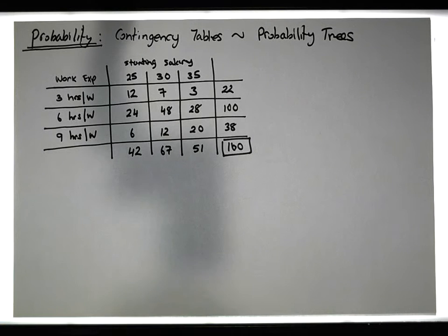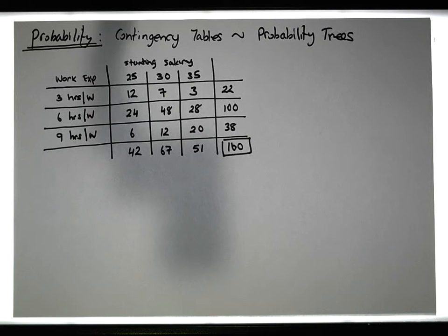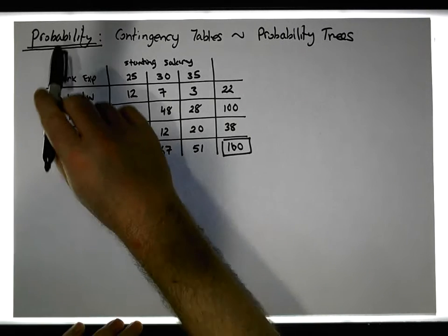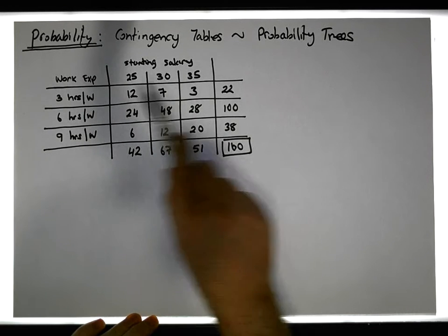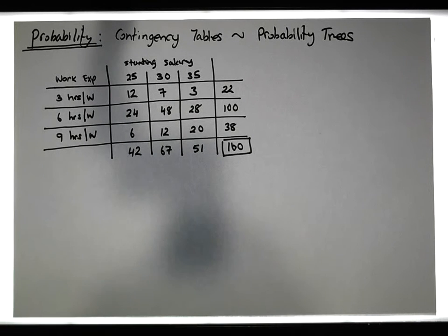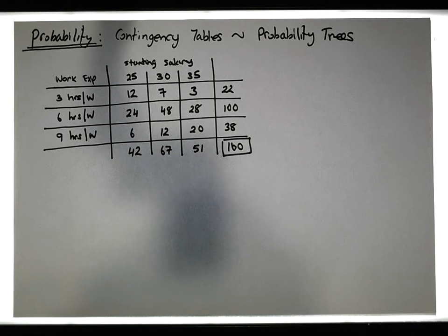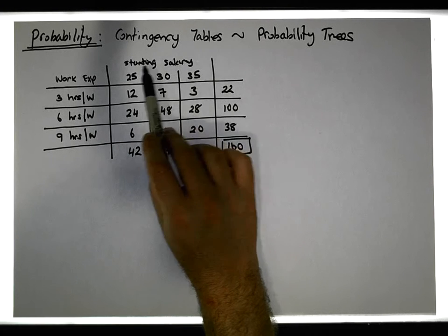Hi guys, this is Jonathan Lambert with the Mathematics Development and Support Service at National College of Ireland. In this short video, another in our series dealing with probability theory, we want to demonstrate how to generate a probability tree or a decision tree from a contingency table.